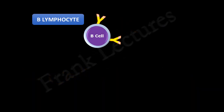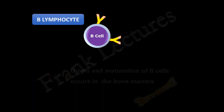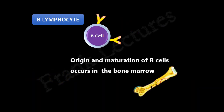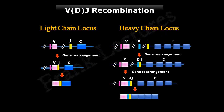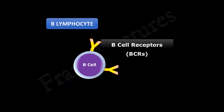We know that B cells originate and mature in the bone marrow. In the previous video lectures we also studied VDJ recombination, which occurs during the early development of B cells. The light and heavy chains are selected by gene rearrangement and together form the B cell receptors that are expressed on the cell membranes of the B cells.